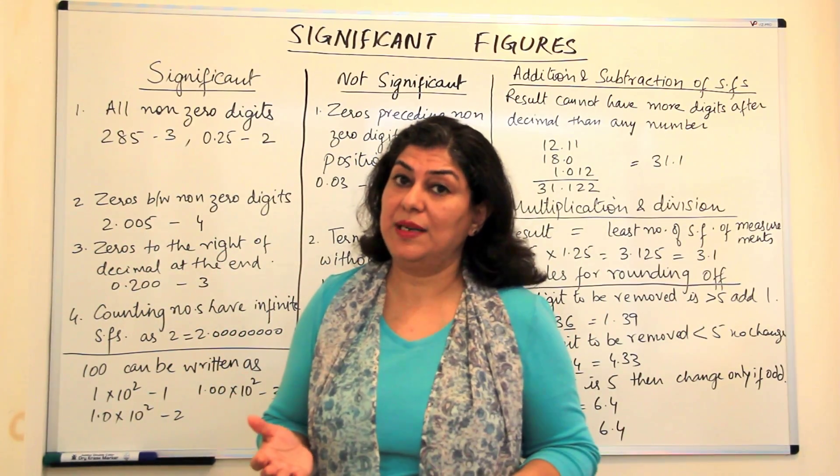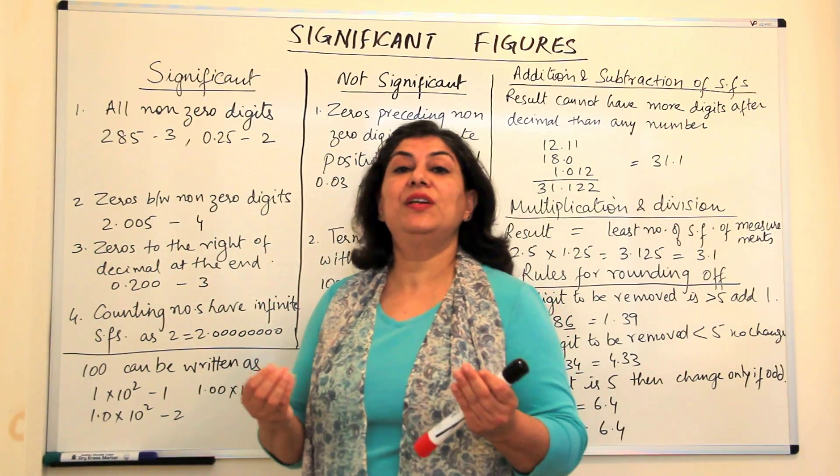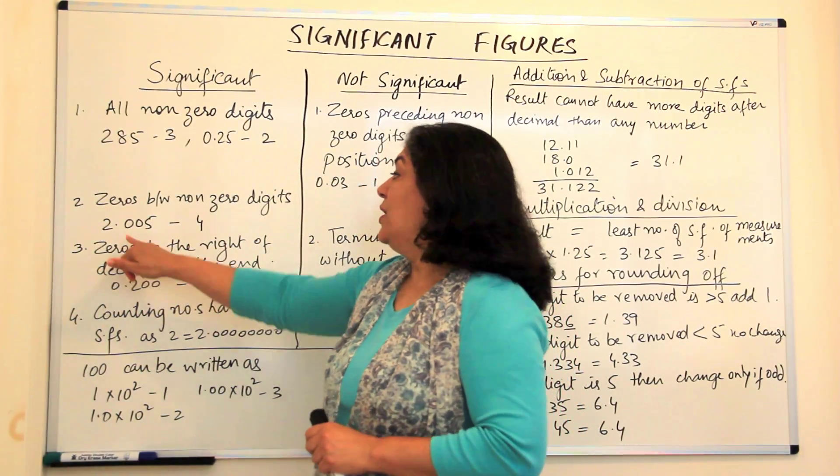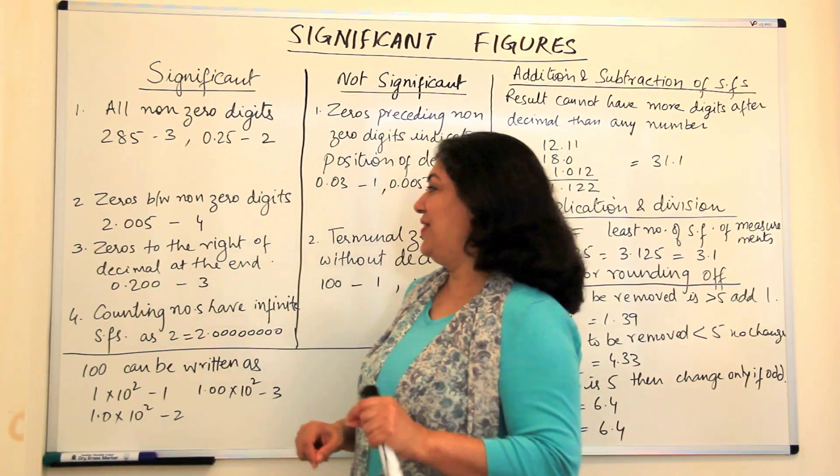So whenever you have zeros between two non-zero digits, it means they have been accurately measured and therefore they should also be significant even if their value is zero. So 2.005 should have four significant figures.